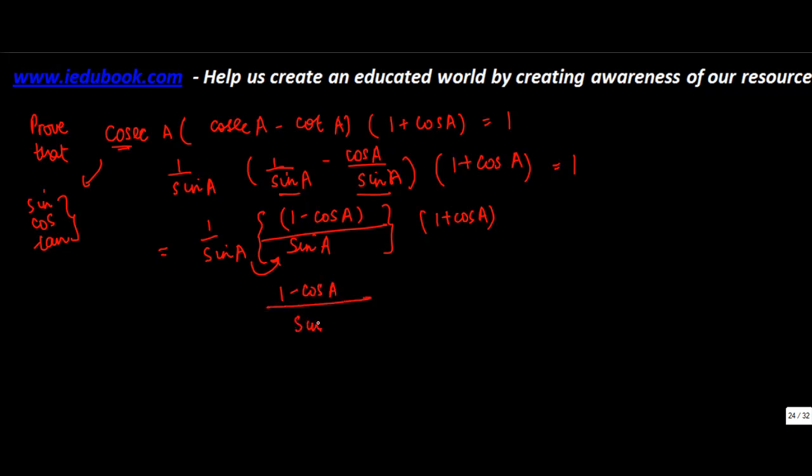So we'll get 1 minus cos A upon sin square A. Sine A into sine A gives me sin square A, into 1 plus cos A. Now this is something like A minus B into A plus B if you see this and this.